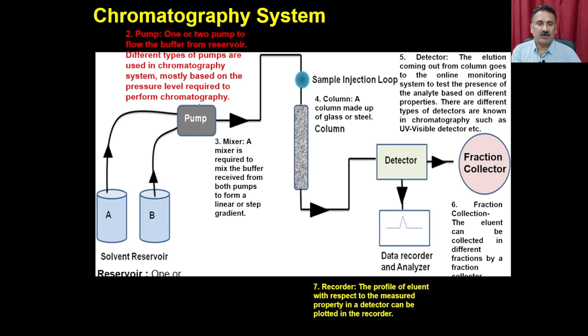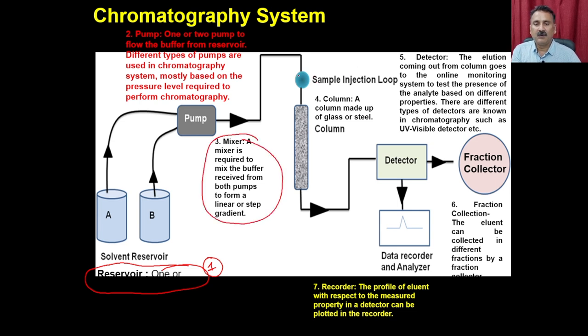The number of distribution planes is an indirect measure of column efficiency — higher N is desirable for better separation. When packing a column, ensure the packing is very compact to maximize the number of distribution planes. A typical chromatography system includes: a reservoir, a pump, a mixer, a sample injection port, a column, detectors, a fraction collector, and a recorder.